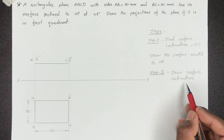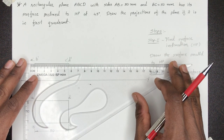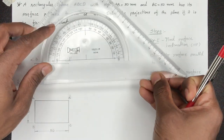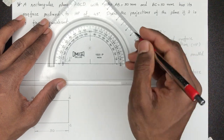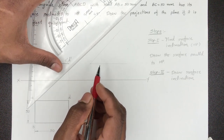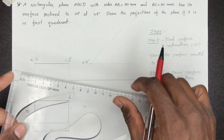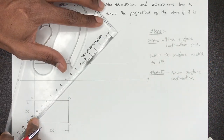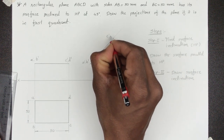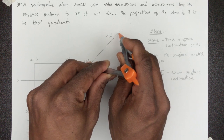Step 2 होगा surface inclination. Front view में जो यह line है उसको XY से 45 degree पे draw करना है. सबसे पहले हम एक reference line draw करेंगे, उस line से 45 degree पे एक line बनाएंगे. यहाँ पे होगा A' B'. Line का distance है 50 mm, तो 50 mm पे हम एक point mark करेंगे — यहाँ पे मिलेगा C' और D'. यहाँ पे हम surface inclination show करेंगे जिसकी value है 45 degree.